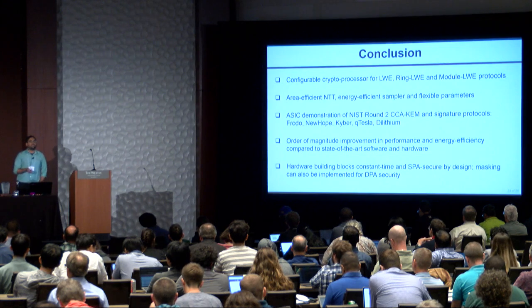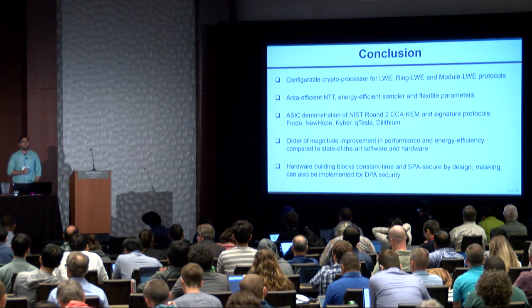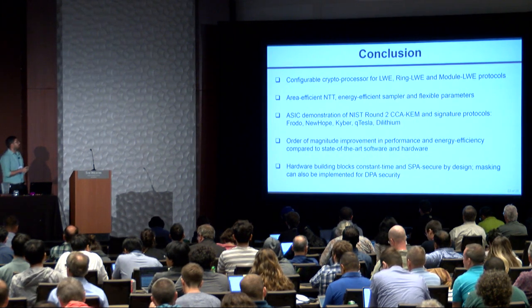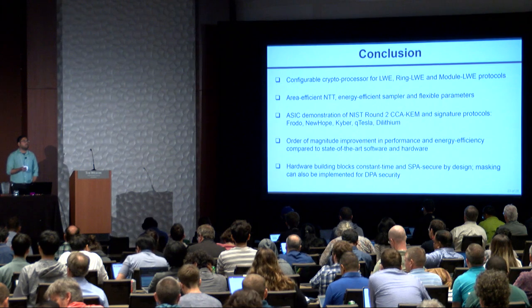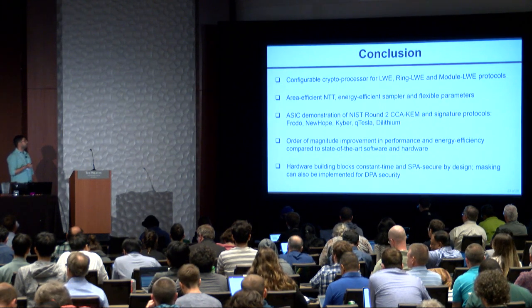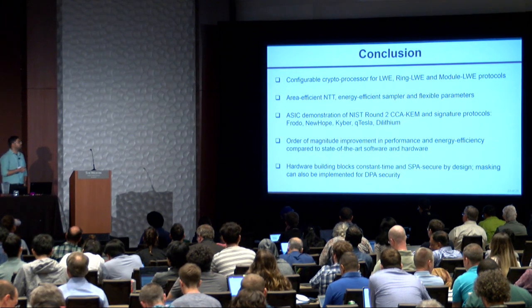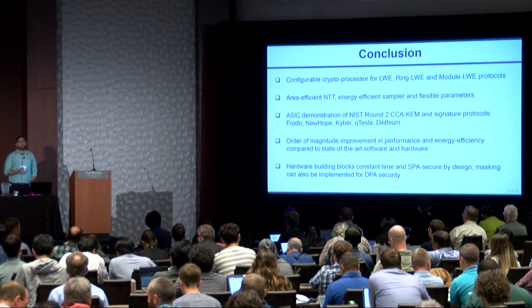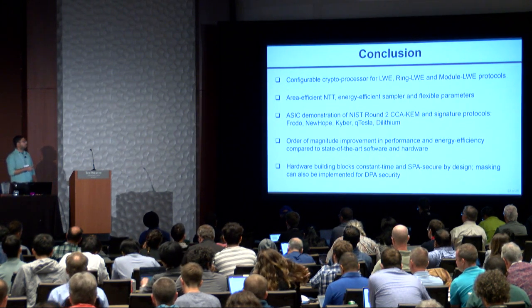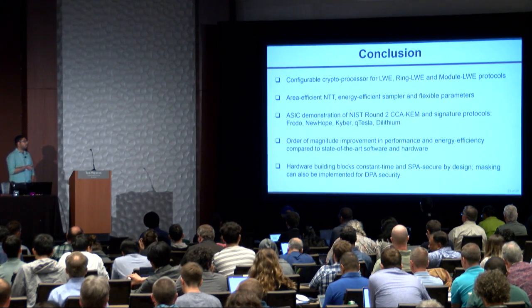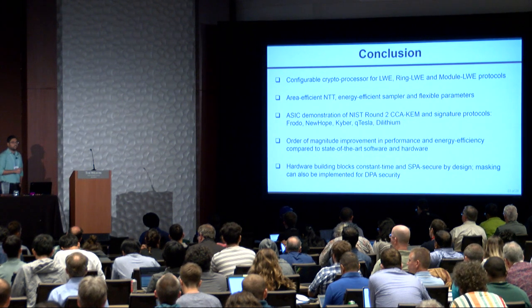To summarize, in this work we have presented a configurable crypto processor for LWE, ring LWE, and module LWE protocols, with area-efficient NTT, energy-efficient sampler, and flexible parameters. We provide detailed benchmarking of the NIST key encapsulation and signature protocols and observe around an order of magnitude improvement in both energy efficiency and performance compared to state-of-the-art software and hardware. In terms of side-channel security, our key hardware building blocks are constant time and SPA-secure, and we also show how the programmability of our design enables masking for DPA countermeasures.